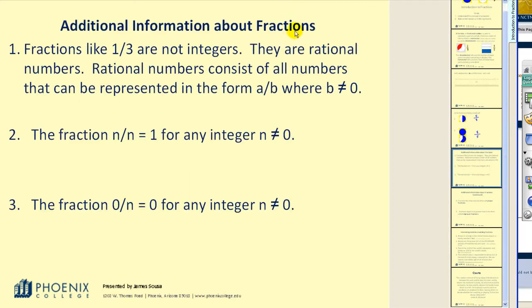Here's some additional information about fractions that we should be aware of. Fractions like one third are not integers. They are rational numbers. Rational numbers consist of all the numbers that can be represented in the form of A over B, where B does not equal zero. So if you can write it as a fraction where the denominator is not equal to zero, it would be considered a rational number.